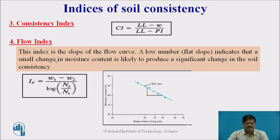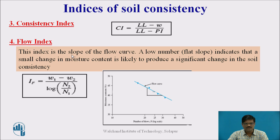The flow index is the slope of the flow curve. In the liquid limit determination, we plot a semi-log graph with number of blows on the log-scale x-axis and water content on the y-axis — the resulting line is called the flow curve. The flow index is given by: w1 minus w2, divided by log(N2) minus log(N1), which represents the slope of that curve.